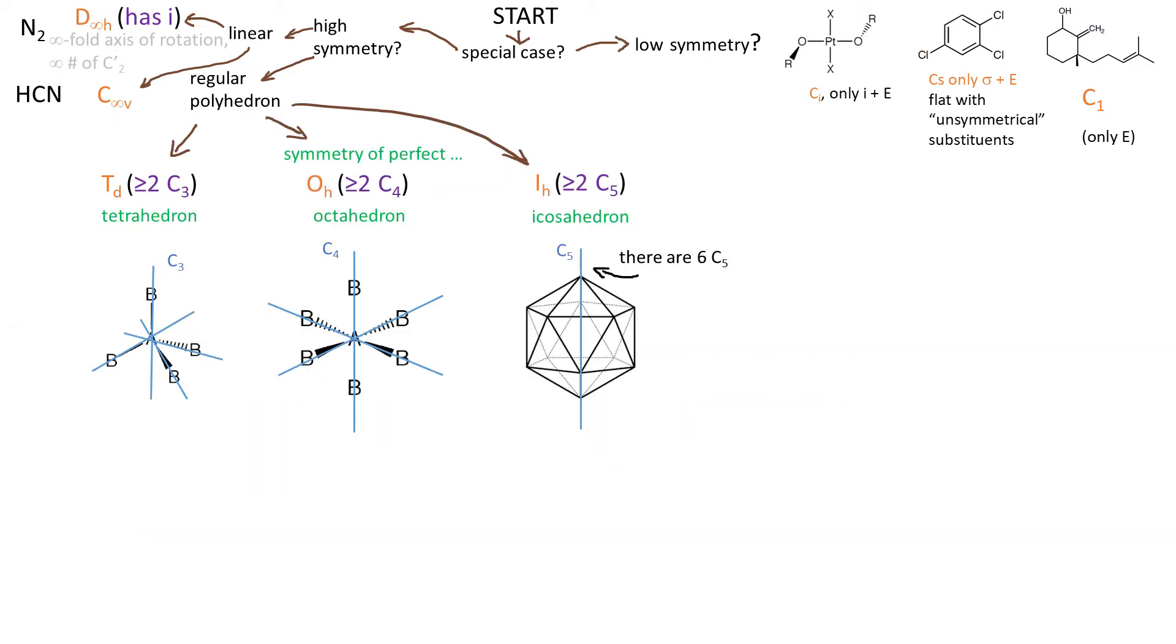Next let's talk about polyhedra. We have TD, OH and IH. Their characteristic feature is that they have more than two axes of rotation: C3, C4 and C5 respectively. If any polyhedra appears at an exam it will be obvious. For TD it will be a molecule or iron with four identical simple ligands and tetrahedral geometry because TD is the symmetry of a perfect tetrahedron. For OH again, central atom and six simple ligands and octahedral geometry. OH is a symmetry of a perfect octahedron.